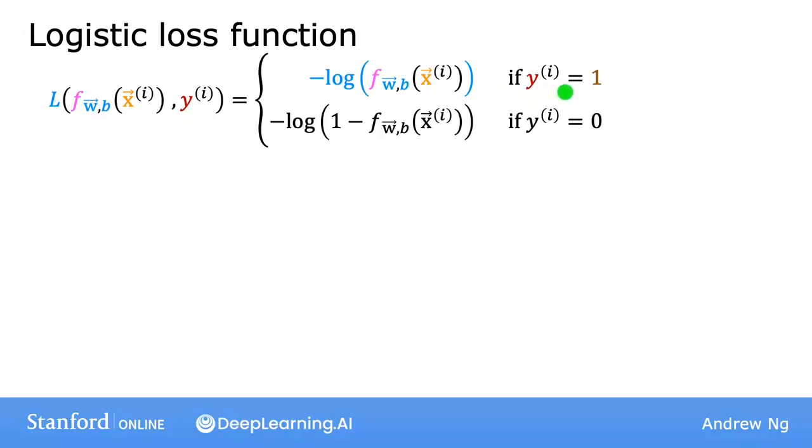I'm going to just write down here the definition of the loss function we'll use for logistic regression. If the label y is equal to 1, then the loss is negative log of f of x. And if the label y is equal to 0, then the loss is negative log of 1 minus f of x. Let's take a look at why this loss function hopefully makes sense.